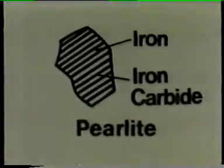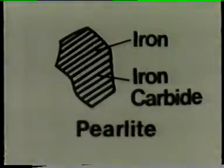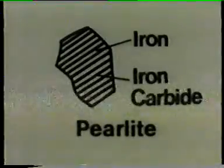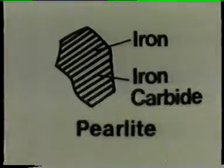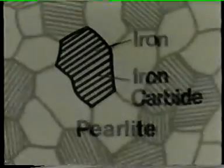Perlite is the name given to this type of grain. They give steel the properties of hardness and strength. This particular piece of steel is made up of roughly equal numbers of the two types of grain. So far, we've only looked at 0.4% carbon steel. However, steel can be produced with other carbon contents. What effect does this have on the grain structure?